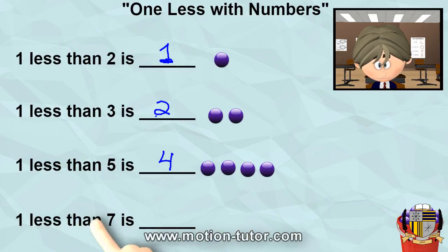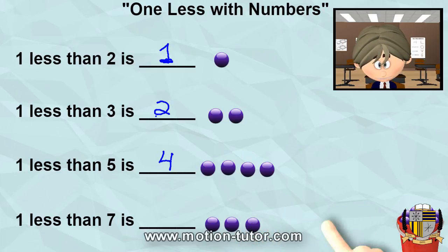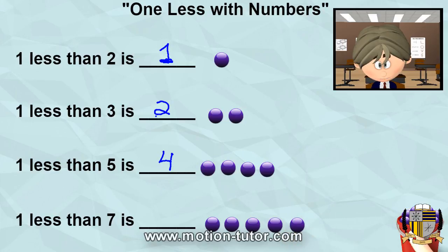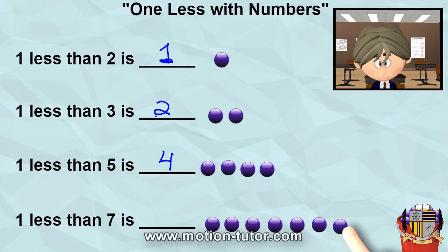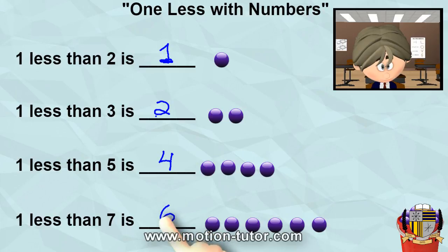One less than seven is... let's take a look. We have seven. One less than seven — we're going to see what one less than it looks like. Four, five, six, and seven. So that's seven. One less than seven will look like this, and we're left with one, two, three, four, five, six. So one less than seven is six.